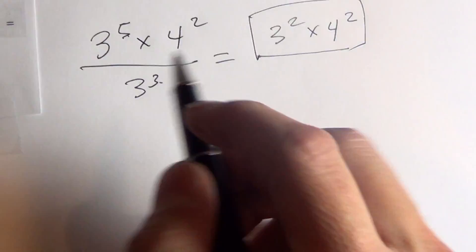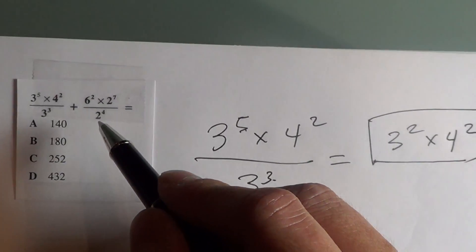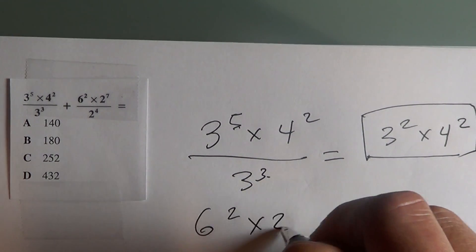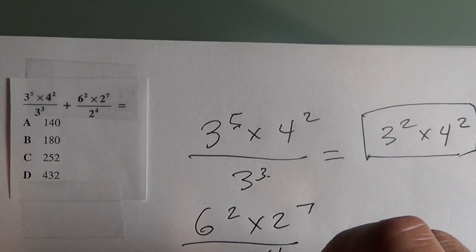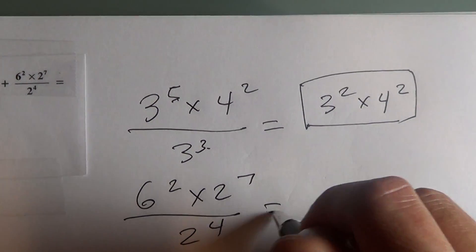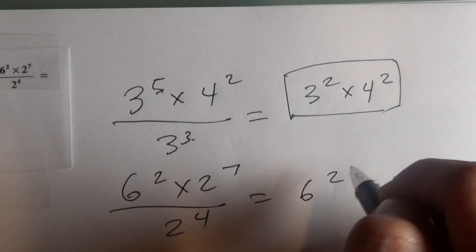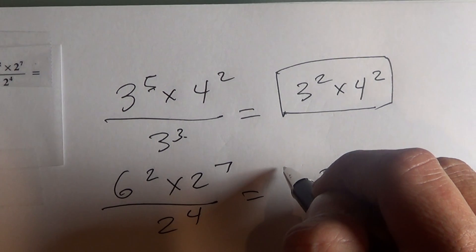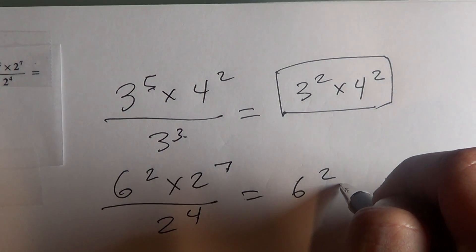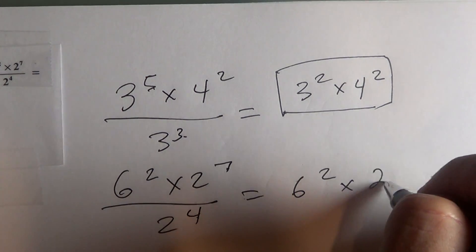If you look at the second half, it's 6 to the seventh divided by 6 to the fourth. Let's simplify this right here. So this would be 6 to the second — subtract 7 minus 4 is 2 to the third.